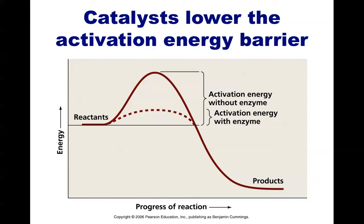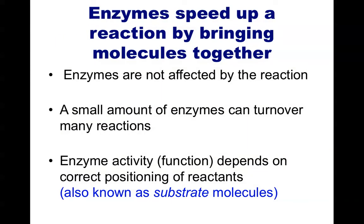In terms of reaction kinetics and thermodynamics, catalysts and enzymes act to lower the activation energy barrier. They do not change how much energy is released in the final products, but they do make the reaction happen quicker. These enzymes bring the reactive molecules, known as substrates, together in the correct orientation, and can sometimes apply a small amount of pressure to get the reaction to happen even faster. The enzymes themselves are not altered by the reaction, and after catalyzing one reaction, they release the product and can bind additional substrate molecules. A single enzyme can carry out many reactions, one after the other.